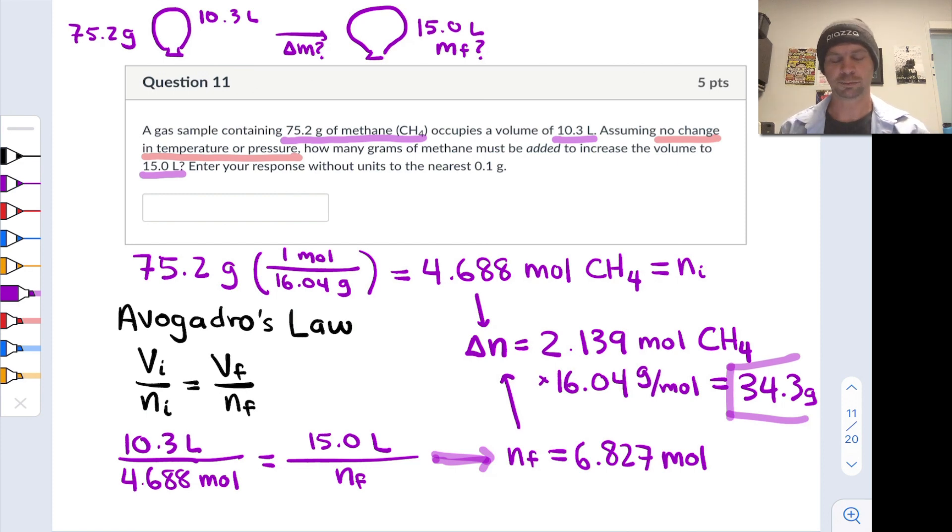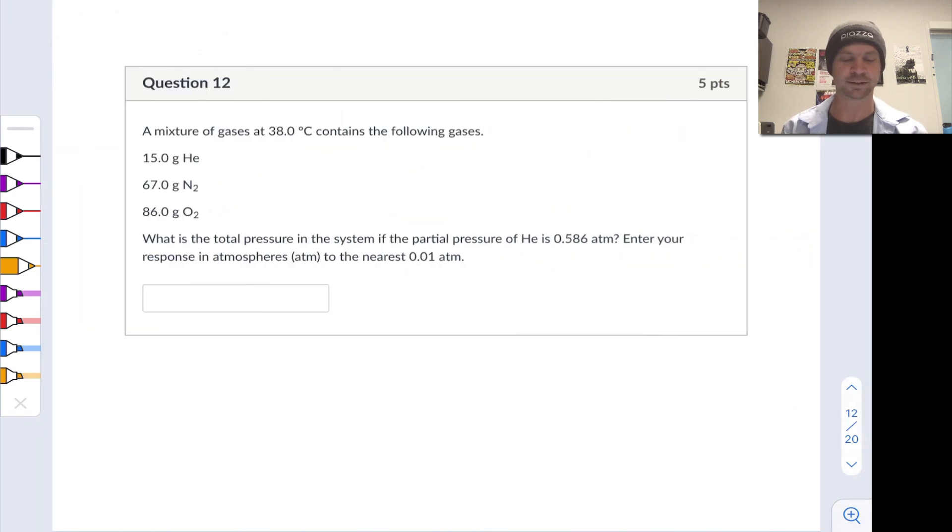Before we leave this problem, it's worth noting it was unnecessary to convert to moles. If we're talking about the same gas under constant temperature and pressure, it follows from Avogadro's law and the definition of molar mass that the volume to mass ratio is also constant. So we could have worked entirely in mass without converting to moles and solved this problem much more efficiently.